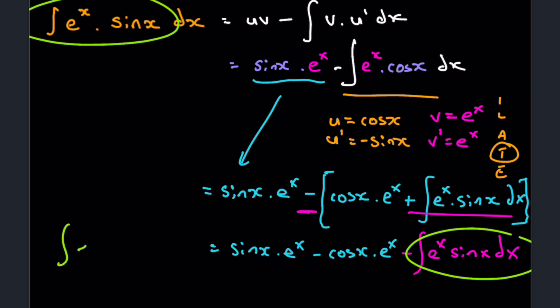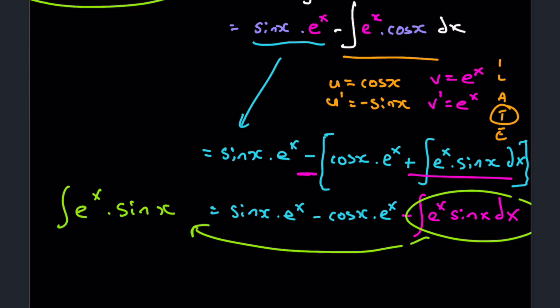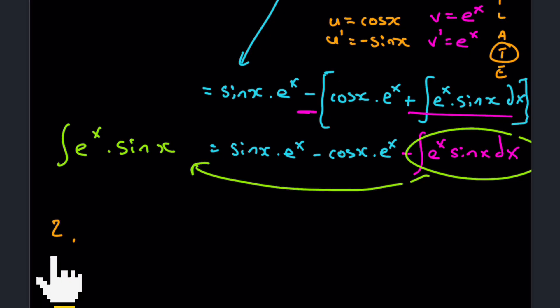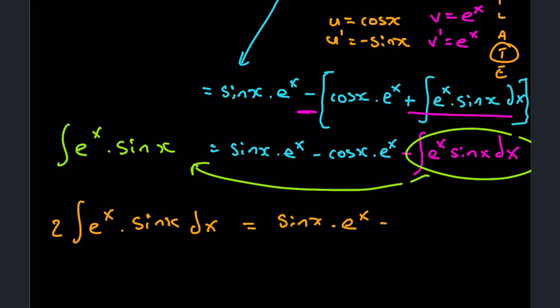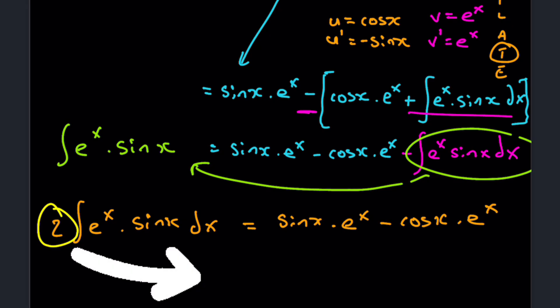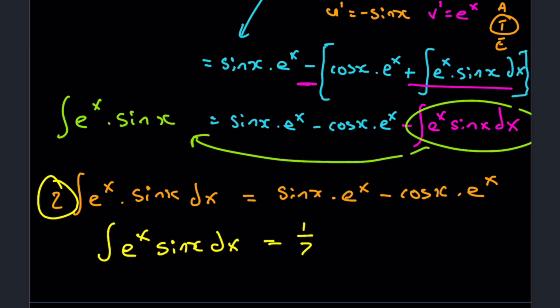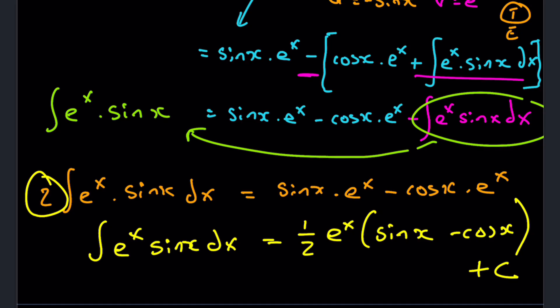That integral of e^x·sin(x) is exactly the same as our original question. So we sum it to both sides, giving two lots of the integral of e^x·sin(x) dx equals sine x·e^x minus cosine x·e^x. Dividing both sides by two, the integral of e^x·sin(x) dx equals one half times e to the x times (sine x minus cosine x), plus c. Don't forget the plus c for an indefinite integral. That's a very common style of question where you combine the repeated result.